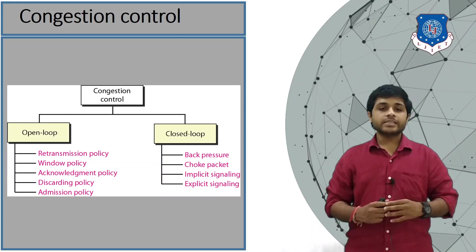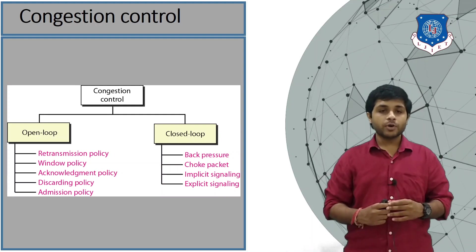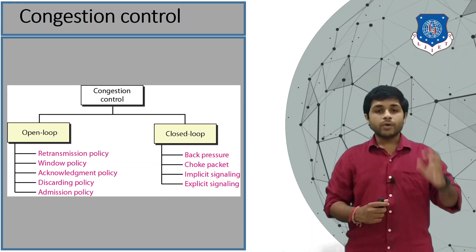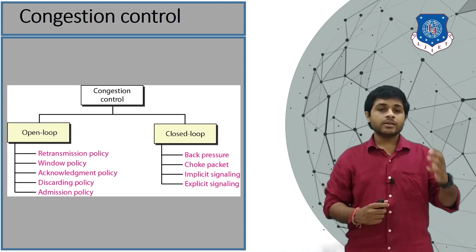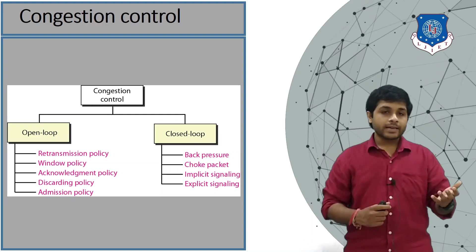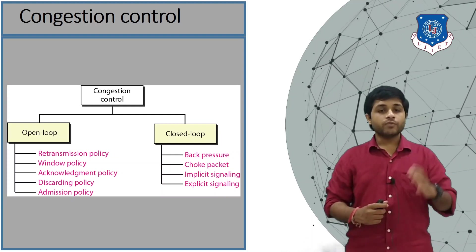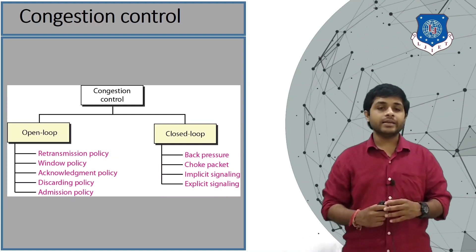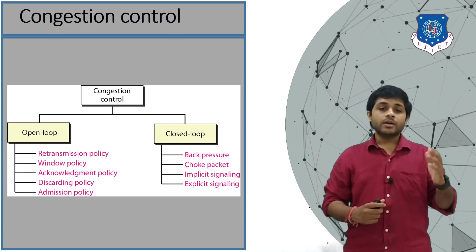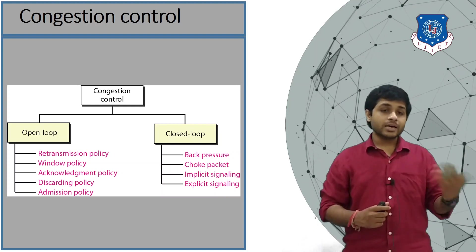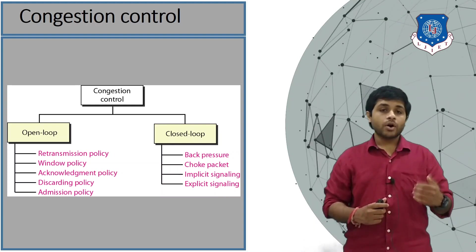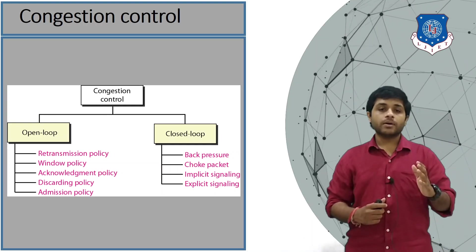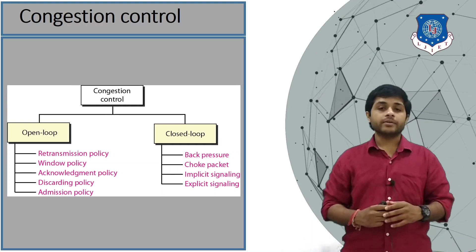The last type in open loop congestion is the admission policy. The admission policy tells the router to analyze packets with higher priority and either discard or delay lower-priority packets according to their priority.